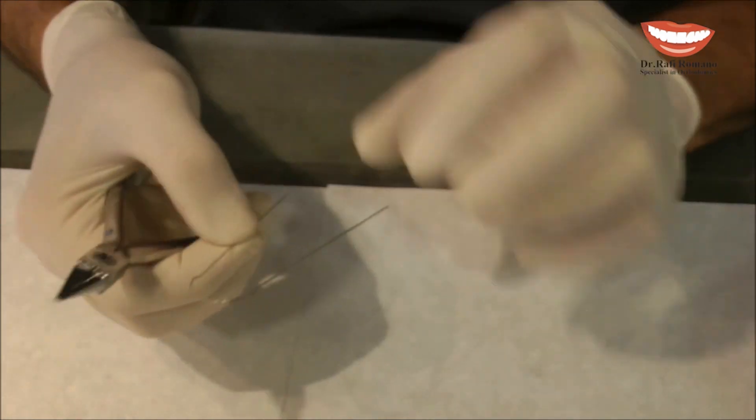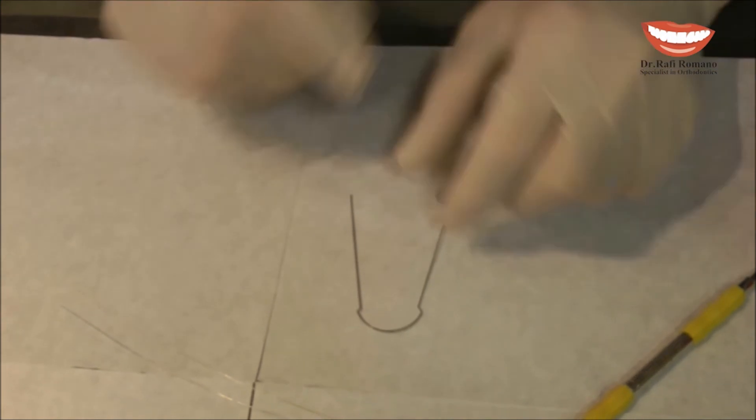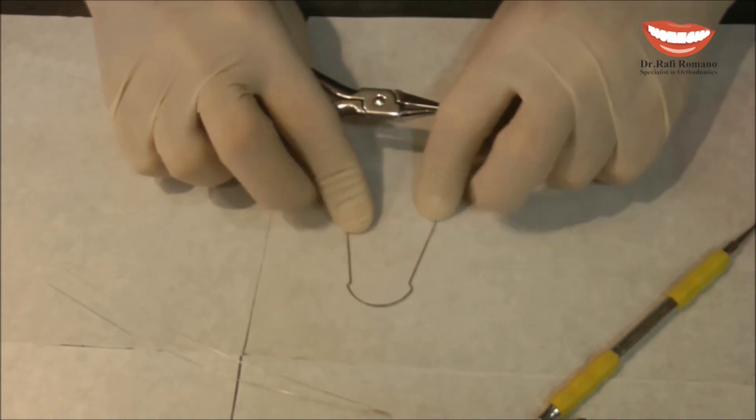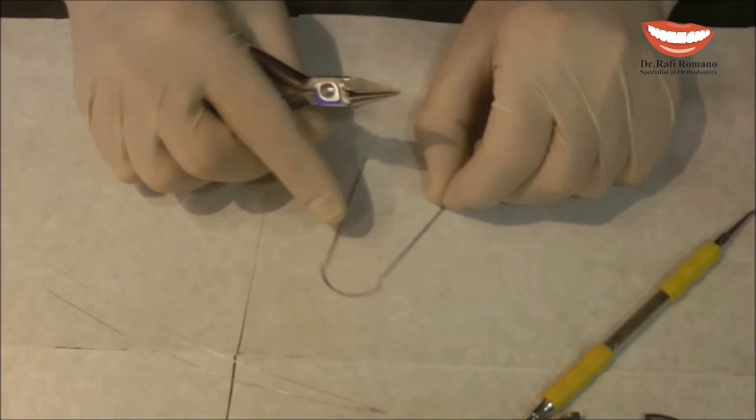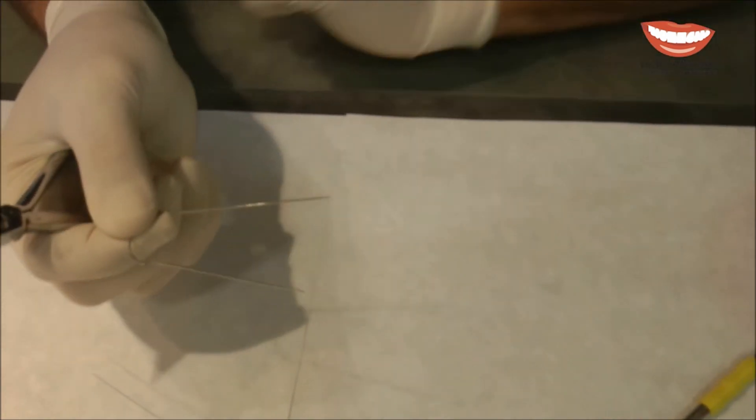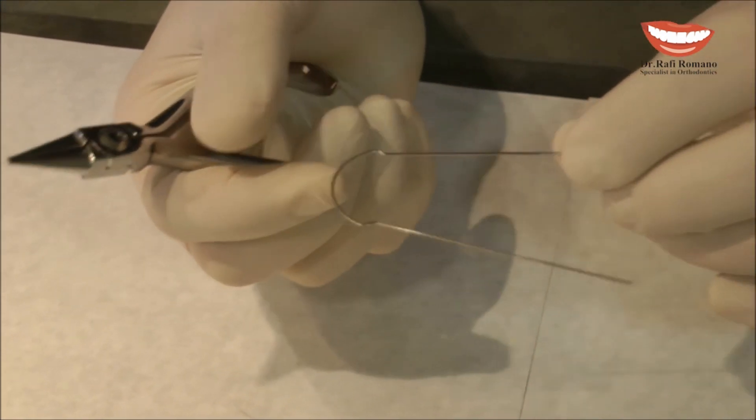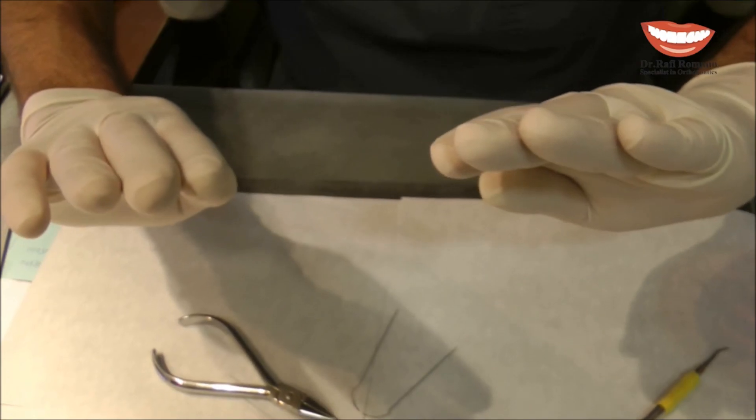I check the wire to see that it is passive. And I have the mushroom bands and now I will show you how we make the compensation for the bowing effect when we close the space.